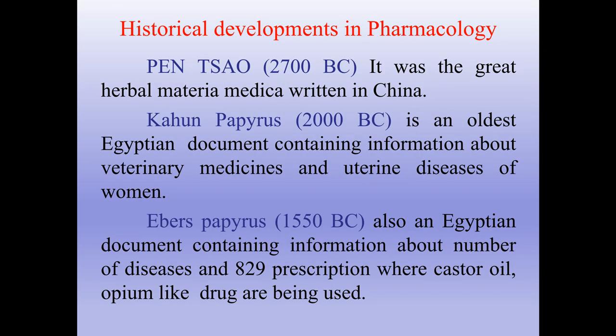Pharmacology started even before Christ. For example, Pen Tsao was a great herbal materia medica written in China. The Kahun Papyrus is one of the oldest Egyptian documents containing information about veterinary medicines and uterine diseases of women. The Ebers Papyrus is also an Egyptian document containing information about a number of diseases and 829 prescriptions, where castor oil and opium-like drugs are used.